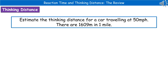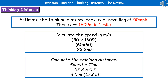A typical question would be: estimate the thinking distance for a car traveling at 50 miles per hour. They may or may not tell you that one mile equals 1,609 meters. First, highlight the key information from the question, then convert 50 miles per hour into meters per second — the standard units for speed. To do that, multiply 50 by 1,609 to get meters, then divide by 60 times 60 to convert hours to seconds, which gives us 22.3 meters per second.